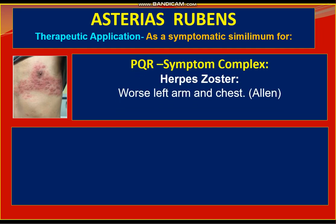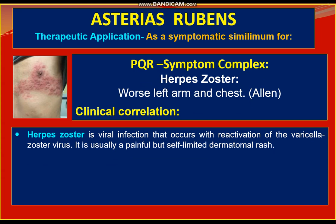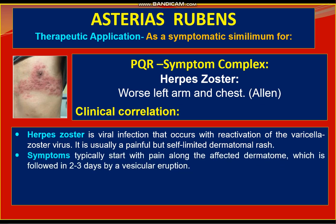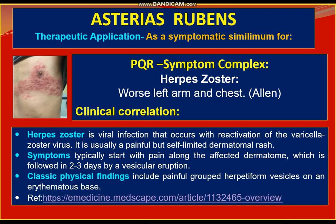The next important therapeutic application is herpes zoster, worst on the left arm and chest — taken from Allen's keynote. Clinically, herpes zoster is a viral infection that occurs with reactivation of the varicella zoster virus. It is usually a painful but self-limiting dermatomal rash. Symptoms typically start with pain along the affected dermatome, followed in two to three days by a vesicular eruption. The classical physical findings include painful grouped herpetiform vesicles on an erythematous base.